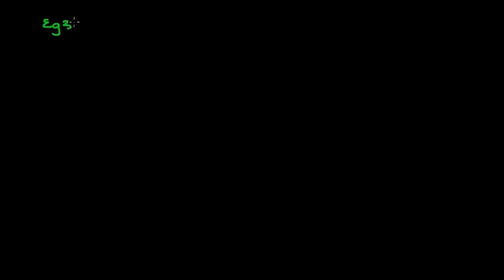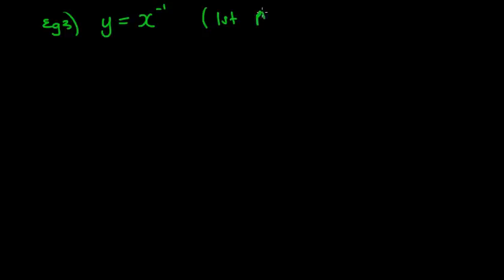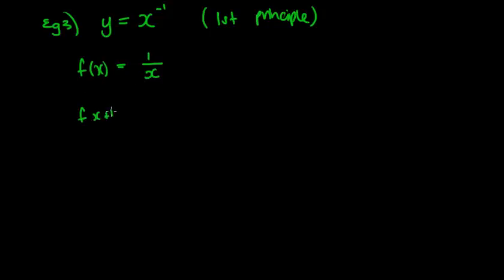Let's move on to a more complicated question. This question asks you to find the derivative from first principles of y equals x to the power of negative 1. All these questions are from first principles — the question will say so as well. So our f of x is x to the negative 1, which I'm going to write as 1 over x. Our f of x plus h would then be 1 over x plus h. So we've got our two main pieces of information.